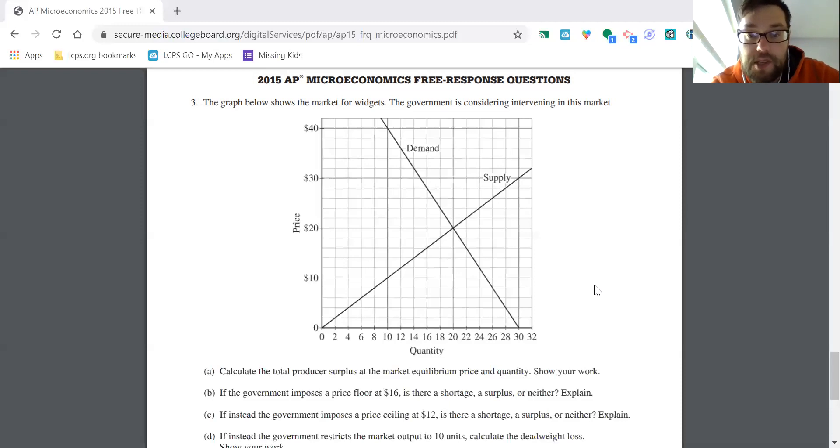Well, you should be able to see that the actual price is above the price floor. So this is sort of a trick question in a way. The answer here should be neither. And why? Well, a price floor, the government is saying the price of the good, in this case widgets, cannot go below the floor. They don't want the price to go below $16. Well, the price is already at $20 in equilibrium.